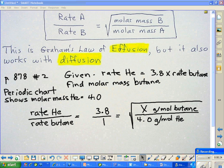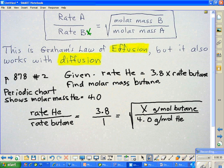So the molar mass of B is going to be on the top, the rate of B on the bottom, which puts the molar mass of B on the top of the other side and the rate of A on the left being the molar mass of A on the other side. This is Graham's law of effusion, but remember it also works with diffusion.